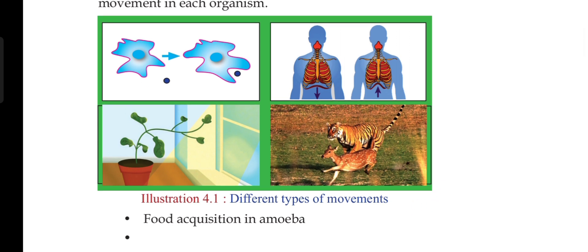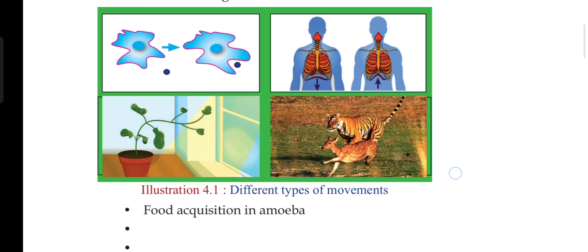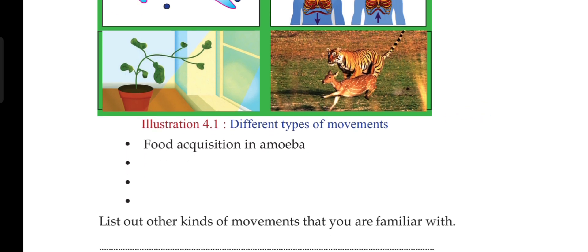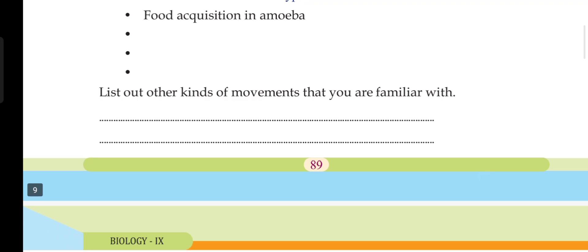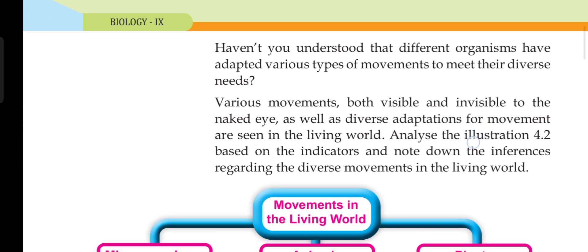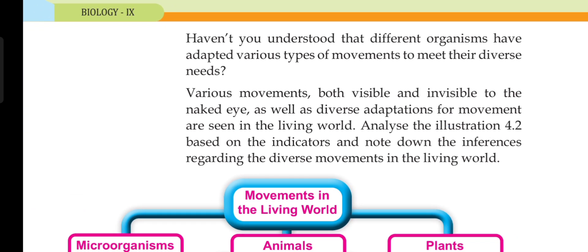In the third picture, a plant. What we call plant movement — it's a kind of movement. The last one is a tiger — that is also a kind of movement. Various movements, both visible and invisible to the naked eye, as well as diverse adaptations for movement, are seen in this world.